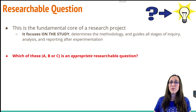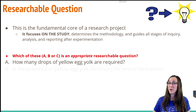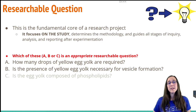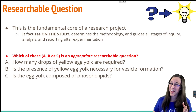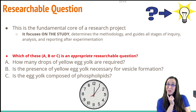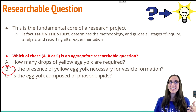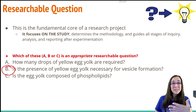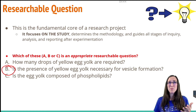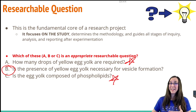Let's see if you understand this concept. Which of the following — A, B, or C — would be an appropriate researchable question? A: How many drops of yellow egg yolk are required? B: Is the presence of yellow egg yolk necessary for vesicle formation? Or C: Is the egg yolk composed of phospholipids? Hopefully you picked B. That question could guide the entire rest of the experiment. The others are more procedural or compositional, as opposed to testing what something can do in an experiment.